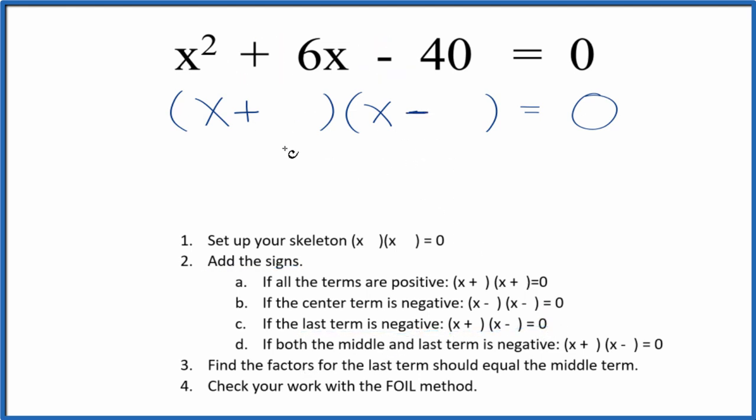Now that we have these signs here we can find the factors for that last term, and those factors should add up to the middle term. So we're looking at 40 here, negative 40, factors of negative 40 that would add up to 6.